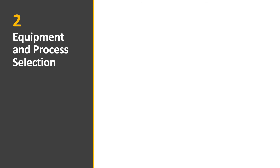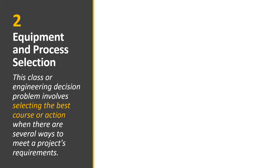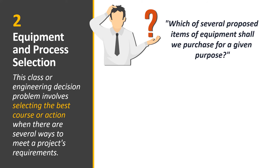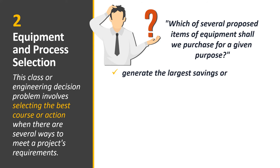The second strategic decision type is equipment and process selection. This involves selecting the best course of action when there are several ways to meet a project's requirement. The question is: which of several proposed items or equipment should we purchase for a given purpose? The engineer decides which equipment generates the largest savings, the largest return on investment, or the least cost.